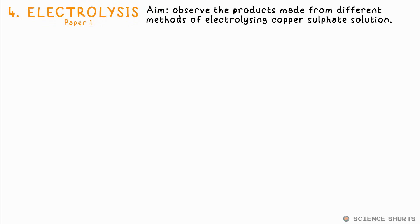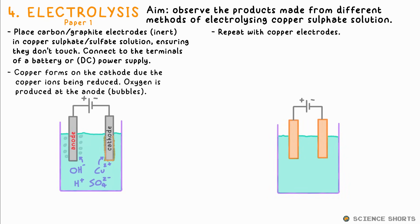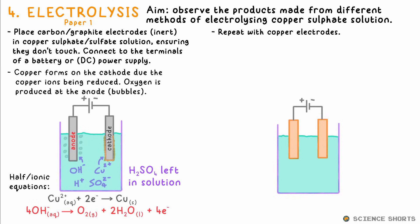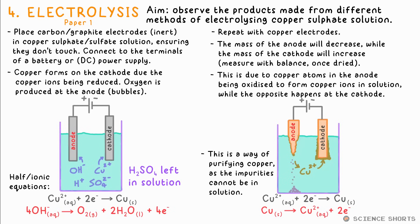Chemistry 4: Electrolysis. We electrolyse copper sulphate solution twice — once with inert graphite electrodes and again with copper electrodes. With the inert electrodes, copper is produced at the cathode and oxygen is produced at the anode. We're left with hydrogen and sulphate ions, which makes sulphuric acid. If you use copper electrodes, the copper atoms in the anode lose electrons to make Cu²⁺ ions that go into solution. At the cathode, the opposite happens — Cu²⁺ ions move to the cathode and gain electrons to turn back into copper atoms; they've been reduced. So we should see the mass of the anode decrease while the mass of the cathode increases. This can be used to purify copper: with an impure copper anode, the impurities will not move to the cathode — they fall to the bottom of the beaker — and pure copper atoms are deposited on the cathode.